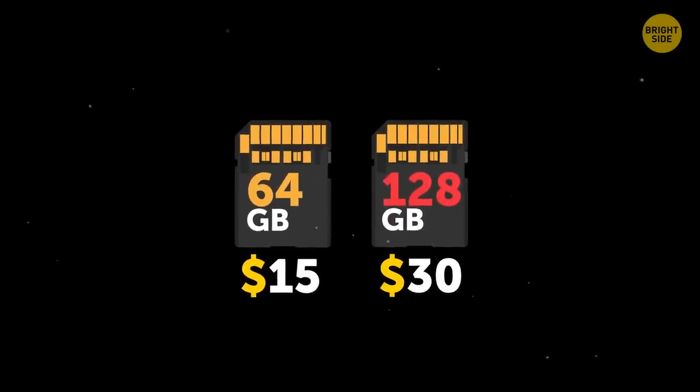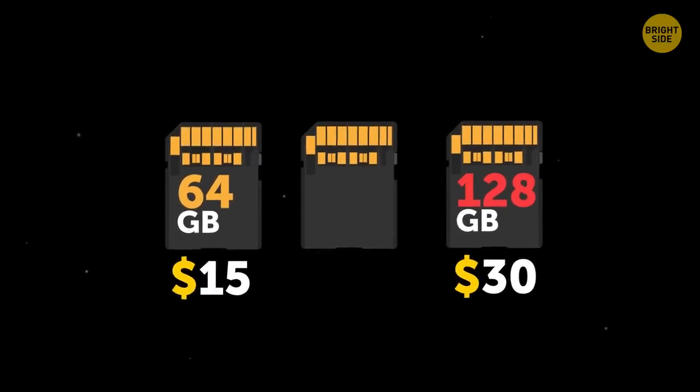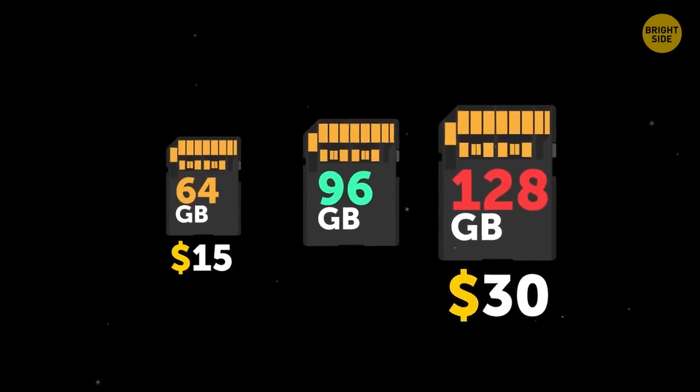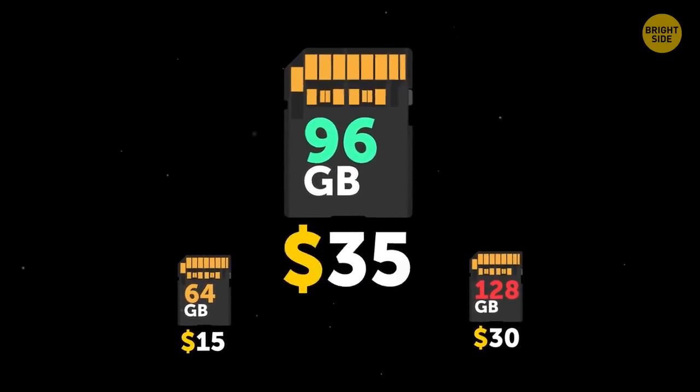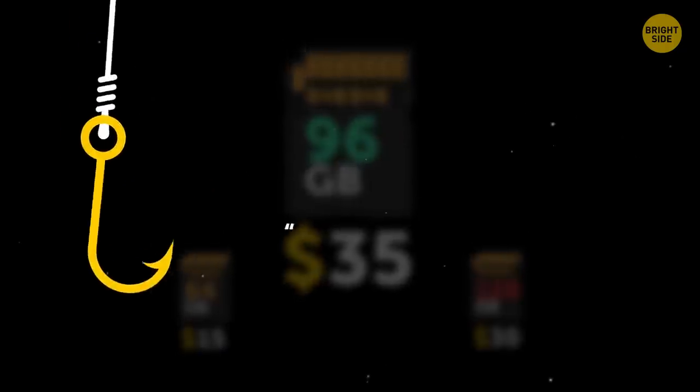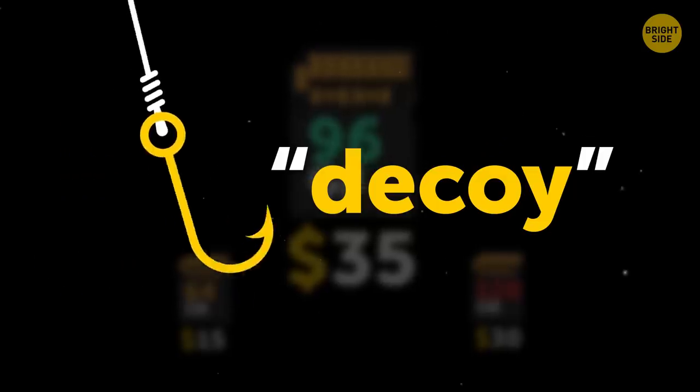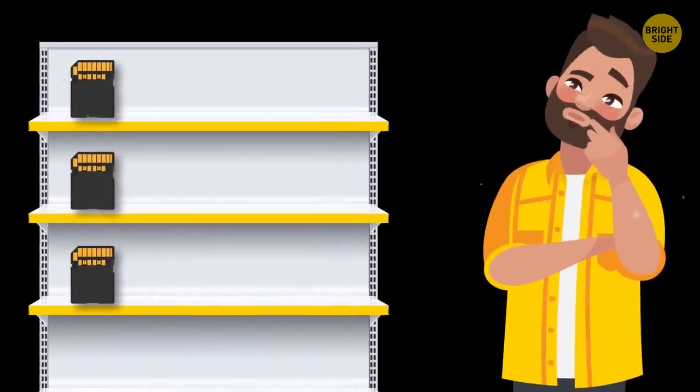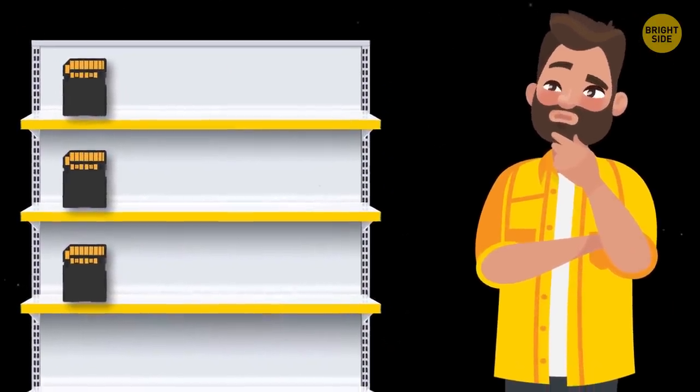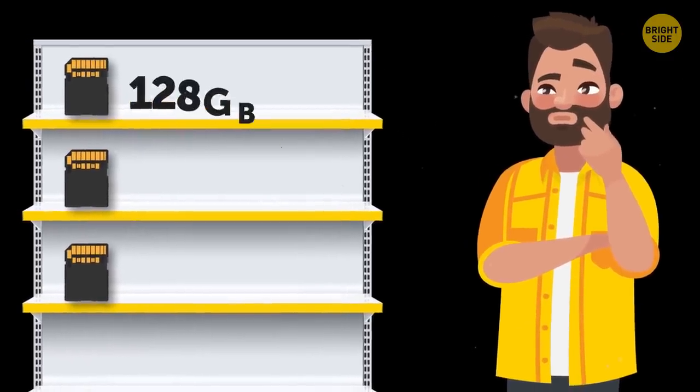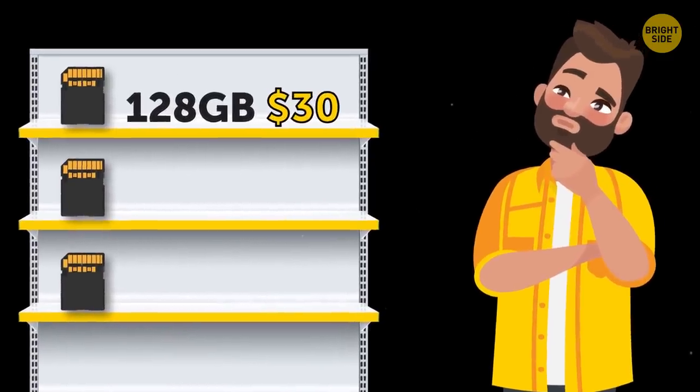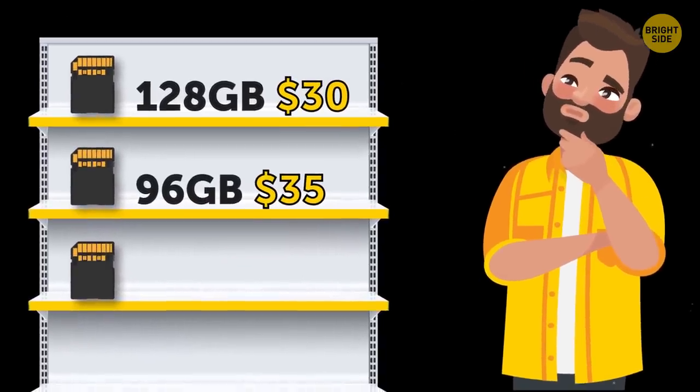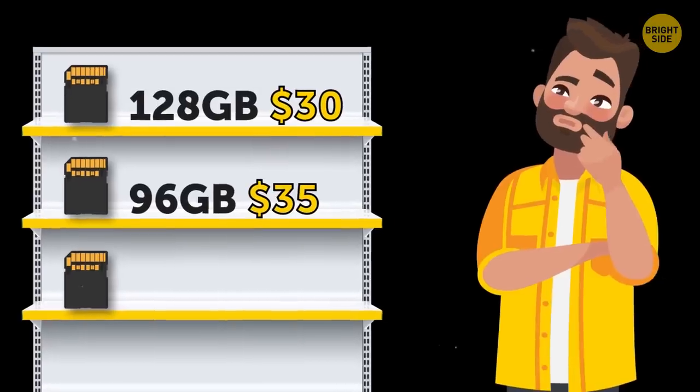And now a third option appears. This SD card has the capacity of 96 GB, which is higher than the first but lower than the second. But its price is higher than both. It's $35. This option is called a decoy, and its role is to make the pricier second SD card more favorable in the eyes of consumers. Indeed, when you look at all three options, you actually consider only the first two, because the third one is worse than either of them. Still, you now look at the 128 GB card from another angle. It's cheaper than the 96 GB one and has more storage space, making it better in all respects.